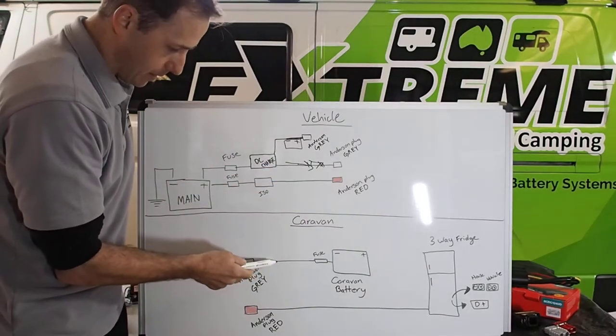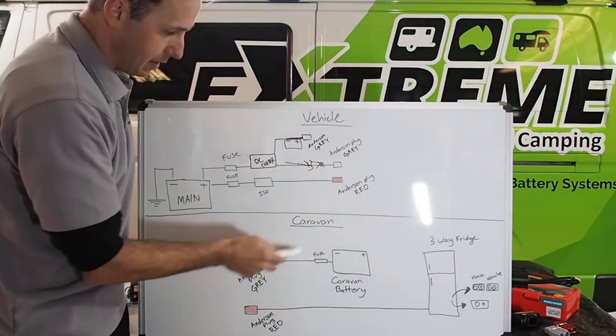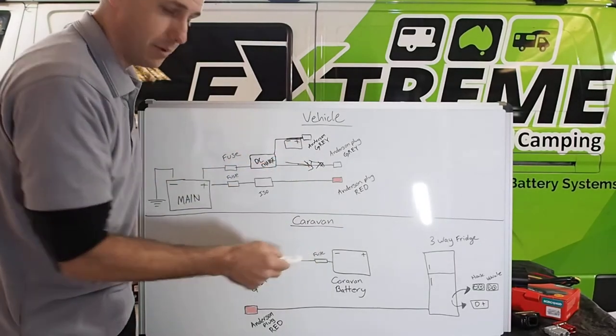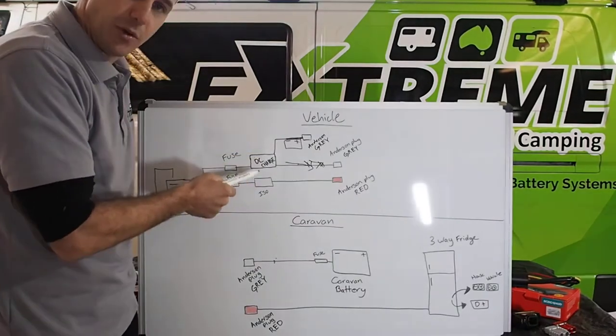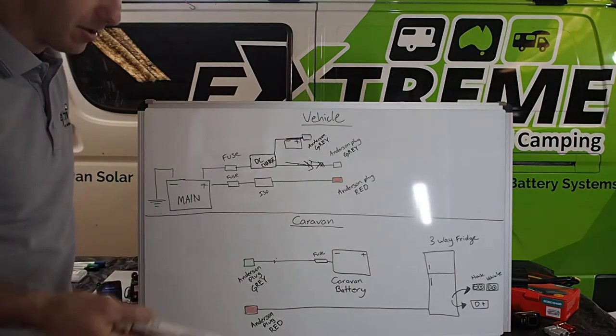As long as the gauge of the cable is thick enough on this point and here, and this is done all properly, then that voltage, the voltage drop between this DC charger and here will be very minimal. Yes, if you read the book, it'll say the DC charger needs to be installed as close as possible to the charging battery. That is true.